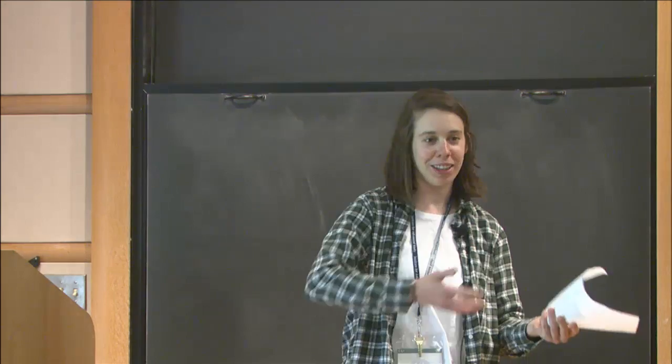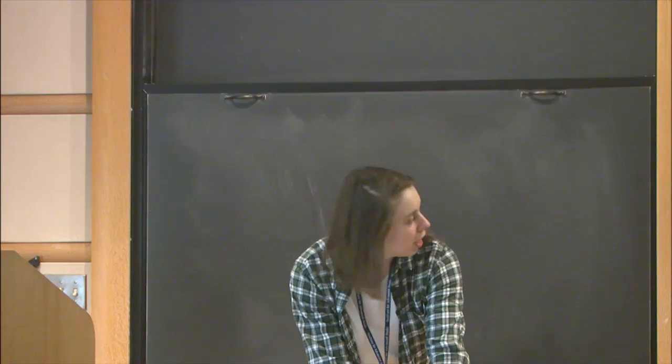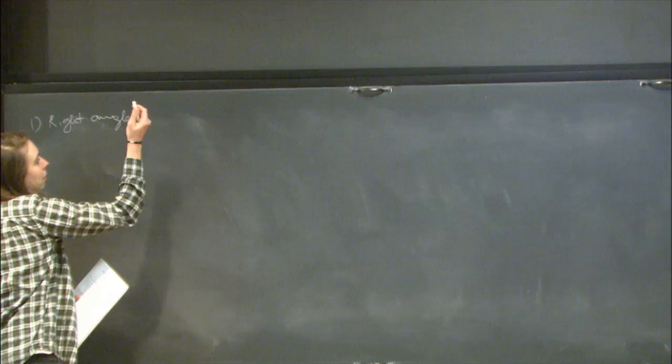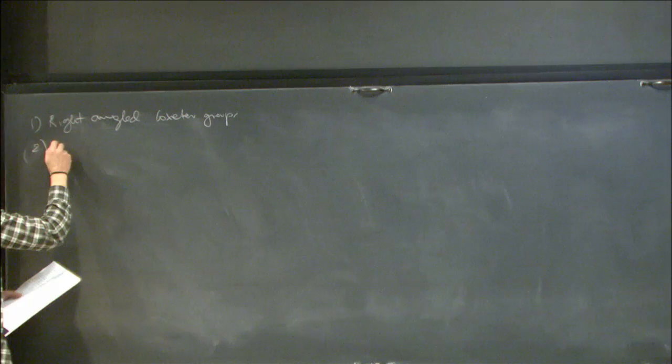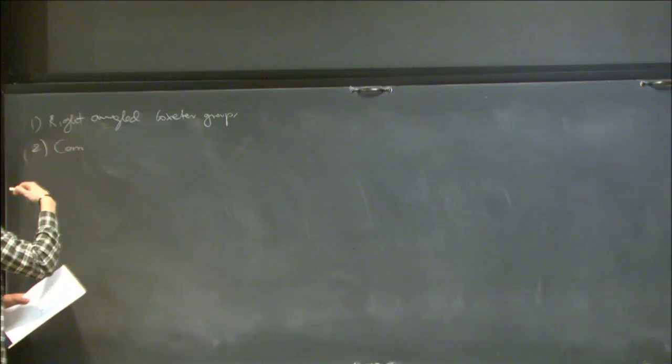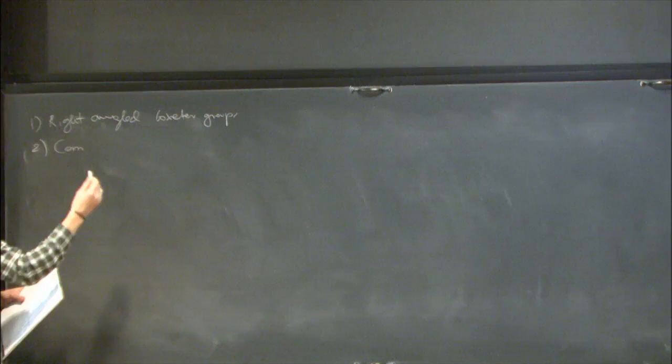Thank you for giving me an opportunity to speak here and for making this program great, at least so far. I'm going to start by talking about right-angled Coxeter groups — I'll define them and discuss a few examples, and then say a few words about properties of groups and combinatorics of defining graphs.